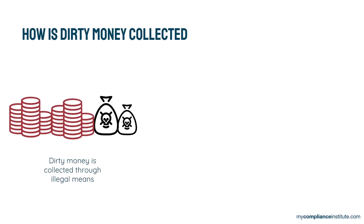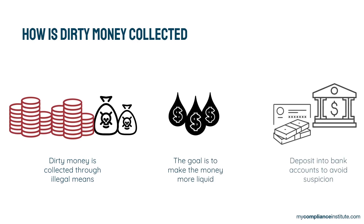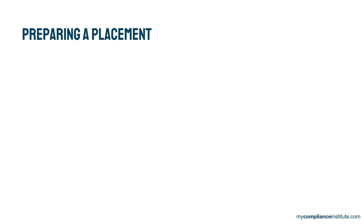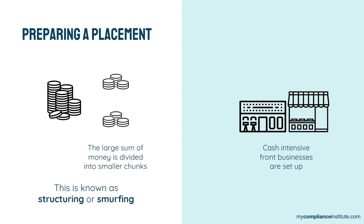A money laundering scheme typically starts with the collection of dirty money. For instance, a cocaine dealer has a lot of cash from drug sales done by him or by his network of runners. He needs to do something with this money — get rid of the cash, make it more liquid, and put it in a bank account, because spending huge amounts of cash will draw suspicion. To do so, the money launderer first prepares a placement. Placement is a technique used to divide huge chunks of money into smaller amounts to avoid suspicion from financial institutions. Dividing huge amounts of cash into smaller amounts is called structuring or smurfing. This is one way of preparing a placement phase, but another way is to make the money seem legitimate through setting up a front business.